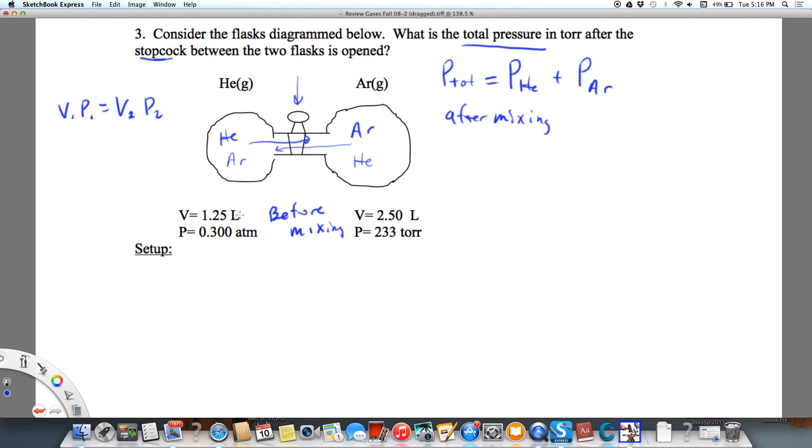Here I have helium initially. So I know that the volume of helium initial times the pressure of helium initial is going to equal, because it's the same gas, we're not changing the number of moles, we're not changing the temperature, the volume of helium final times the pressure of helium final.